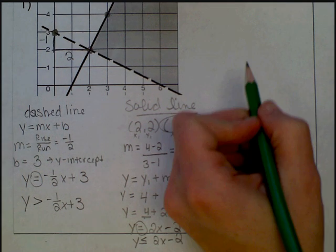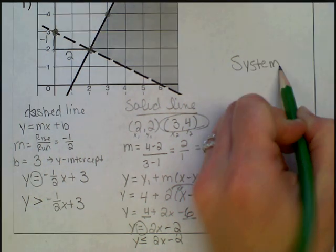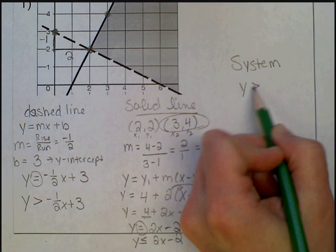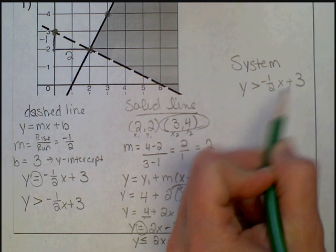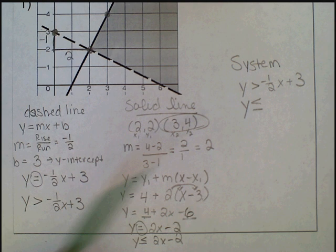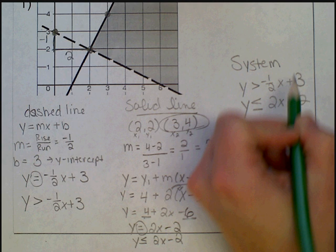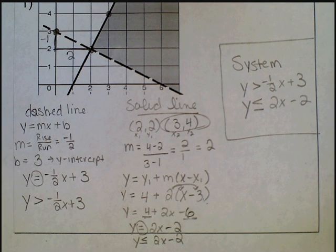My system of inequalities for example 1 is: y is greater than negative one-half x plus 3, and y is less than or equal to 2x minus 2.